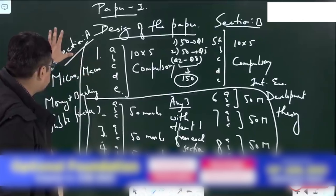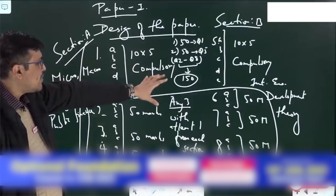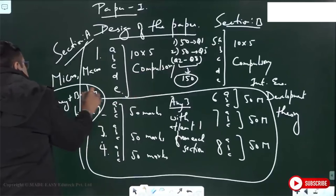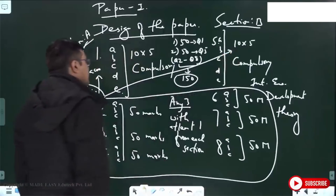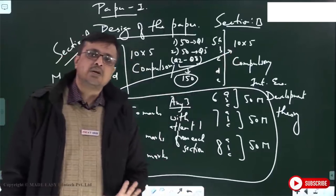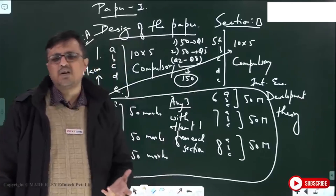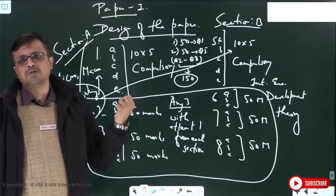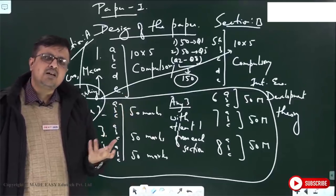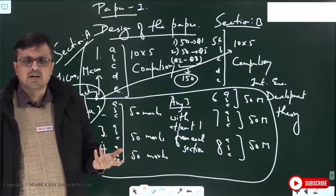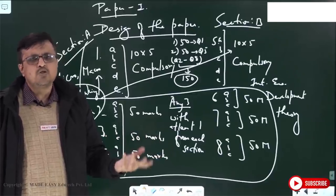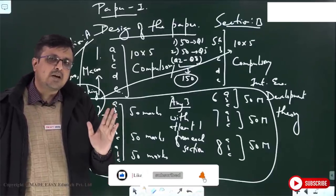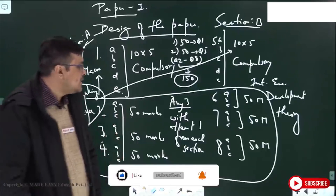So now questions from money, banking, and public finance can appear in Section A or Section B depending on where UPSC wants to place them. To summarize: micro and macro are normally in Section A; international economics and development theory are mostly in Section B; but money, banking, and public finance can be in either section. Prepare yourself mentally and don't assume a question will only come from one particular section.